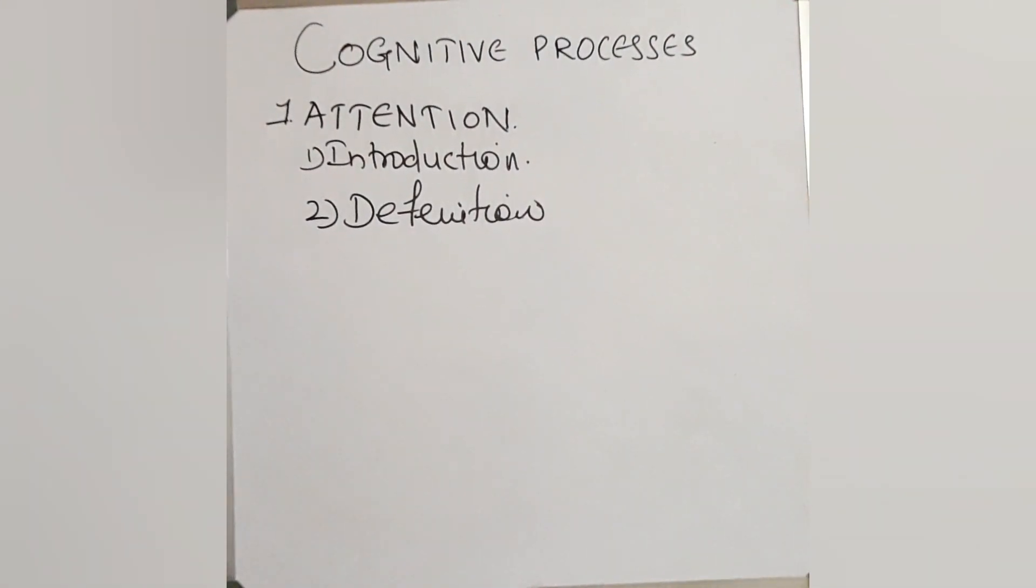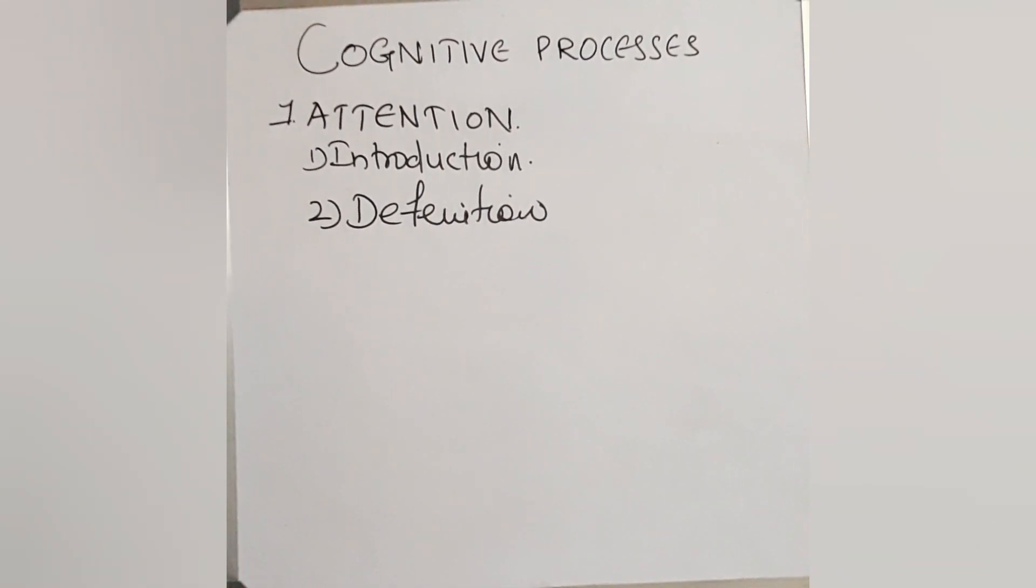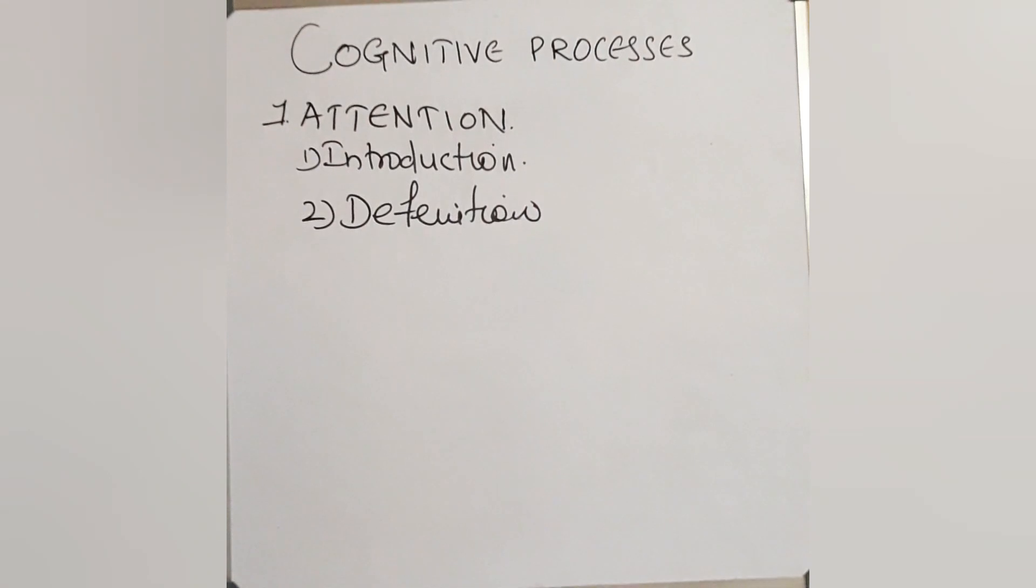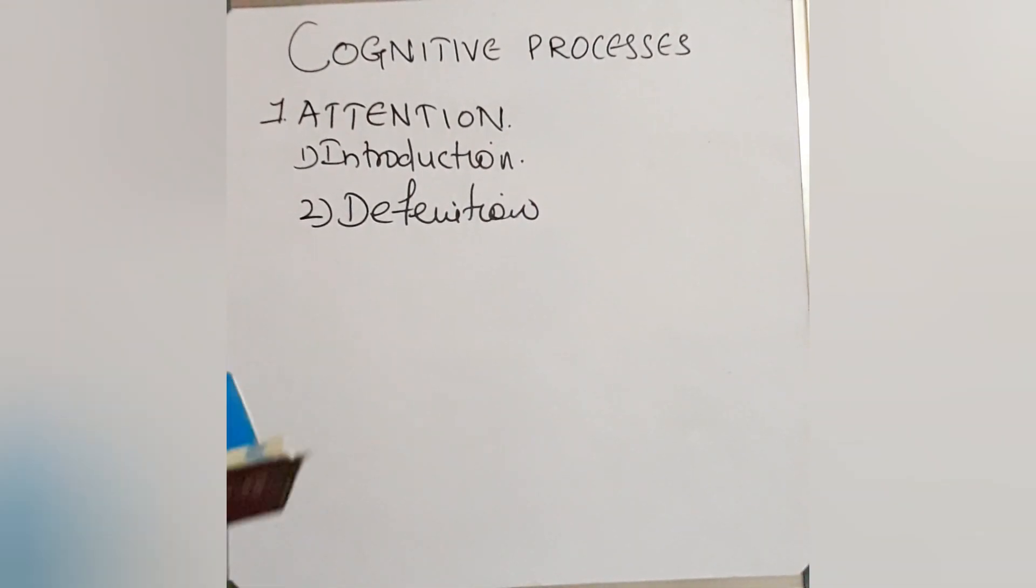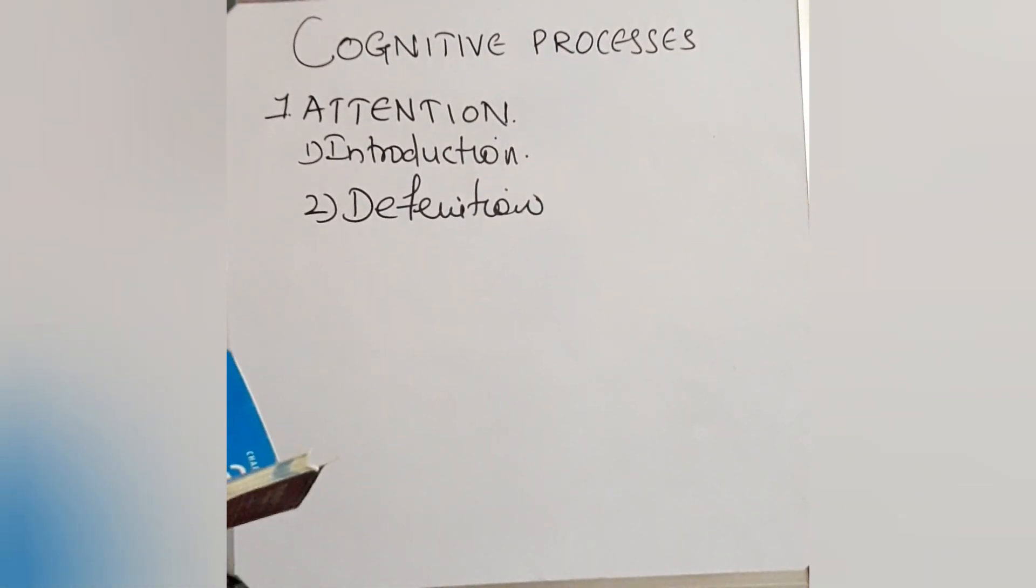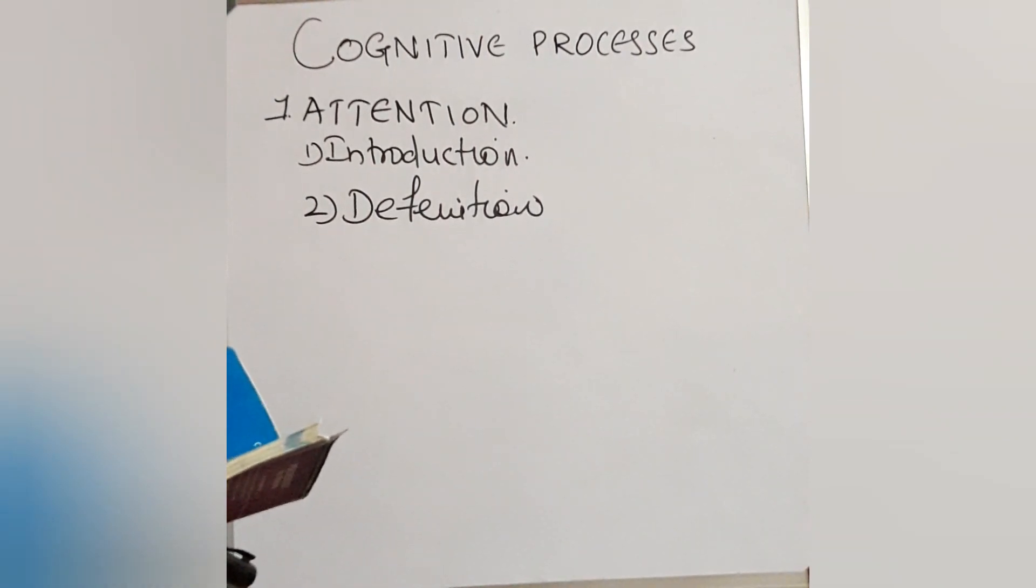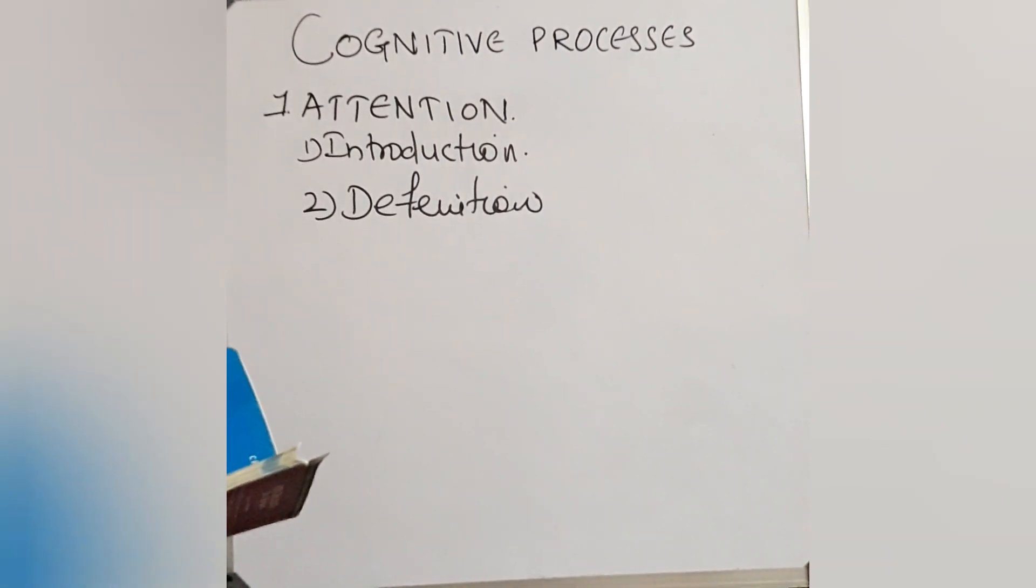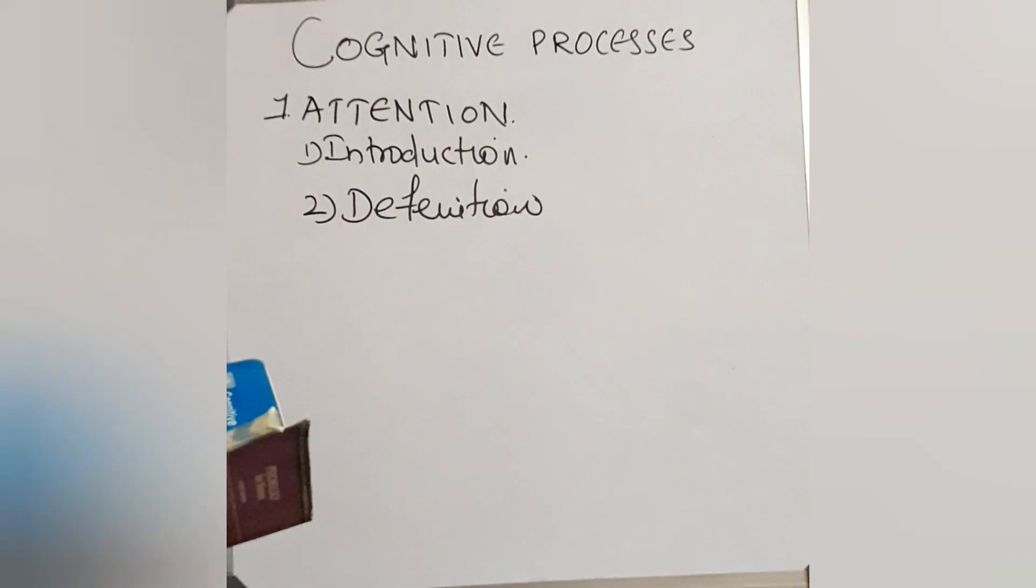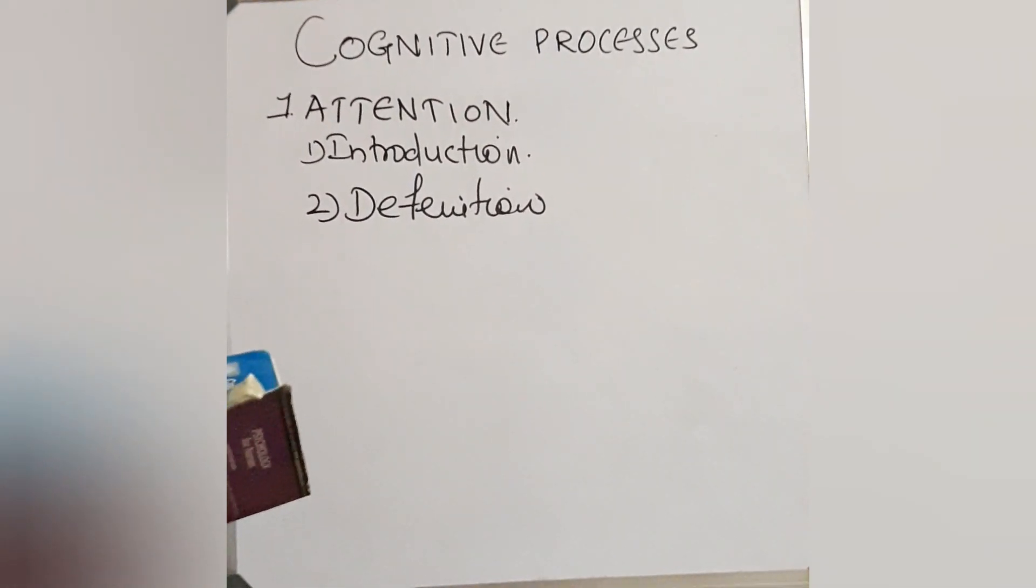Here so many definitions are given by several psychologists. We have to take any one which is very easy for us to study. Any one we can write. Here I am telling one easy one. Attention is the concentration of consciousness upon one object rather than upon another. It is very easy to memorize also. You can learn the same thing.